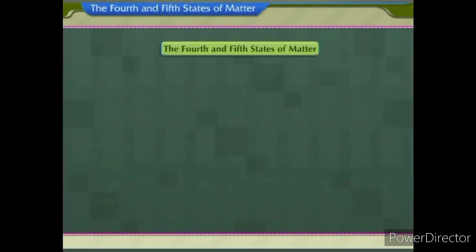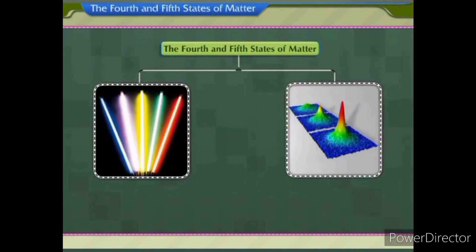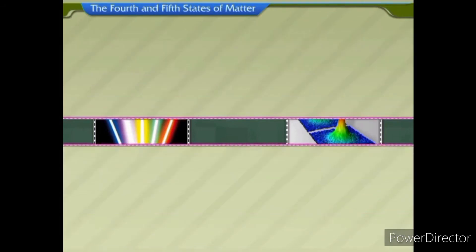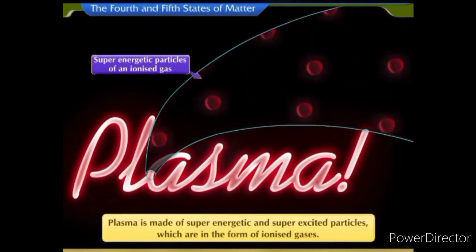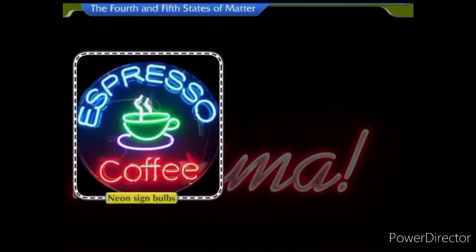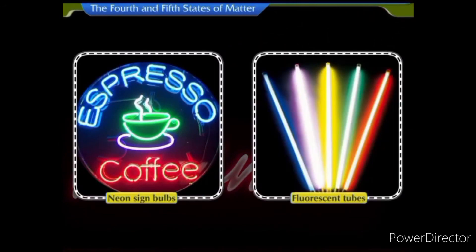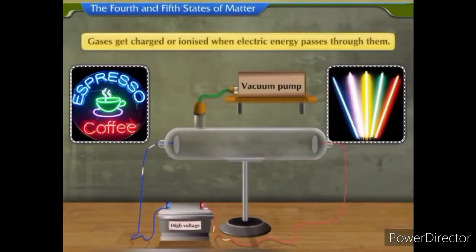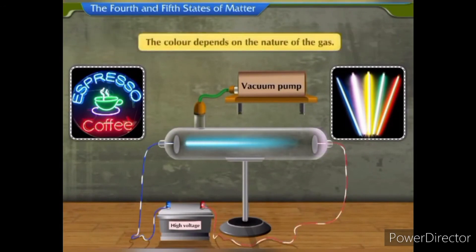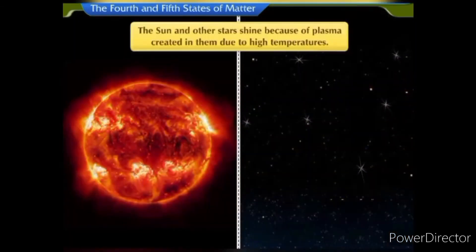The fourth and fifth states of matter. Advancements in science and technology have led to the discovery of two more states of matter: plasma and the Bose-Einstein condensate, or BEC. Plasma is made of super energetic and super excited particles which are in the form of ionized gases. Neon sign bulbs and fluorescent tubes contain plasma in them. Gases get charged or ionized when electric energy passes through them. The sun and other stars shine because of plasma created in them due to high temperatures.